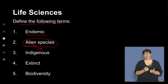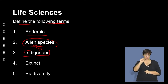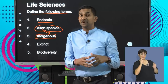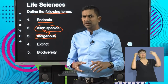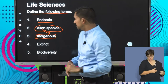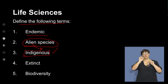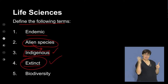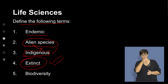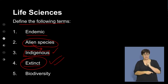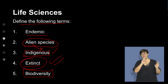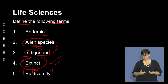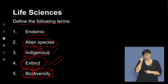Indigenous species refers to species found naturally in an area — they may be found in different parts of the world, but they're naturally found in that area. Extinct or extinction refers to species of plants or animals that no longer exist — important to recognize as a concept when looking at biodiversity. Finally, biodiversity refers to the variety of living organisms found, especially in the context of our South African environments.